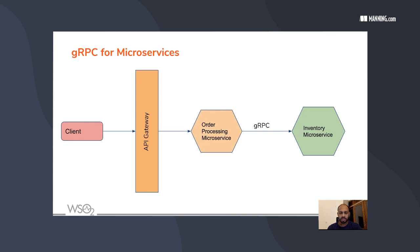My name is Anwan Dias and I'm one of the authors of the book Microservices Security in Action. I authored this book along with Prabhat Siribharadana. We are both from WSO2, where I work as VP and Deputy CTO for API Management and Integration. This session will be based on chapters 8 and 9 of the book.